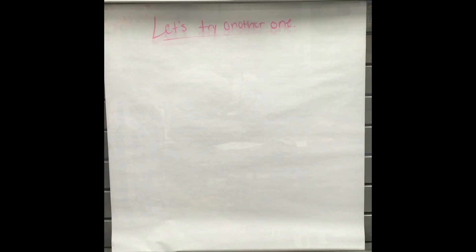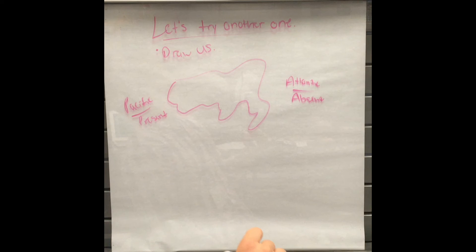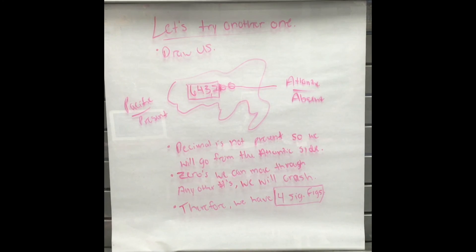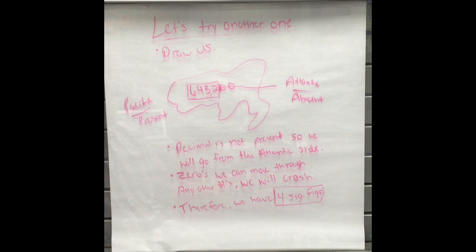Let's try one more. Once again draw a picture of the United States and place the number to be analyzed within it. In this case the decimal is absent, so we will start our counting from the Atlantic. Begin counting from the first non-zero digit on the Atlantic side of the number, which in this case is two, then count to the final digit on the Pacific side of the number. In this case it is four significant digits because we started counting at the two and ended at the six.